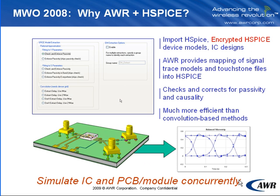AWR's signal integrity solution has HSPICE built right into it — not as an afterthought, but combined right into the environment. All the great features AWR is known for, including usability and innovative SI applications such as ACE and Axiom, work directly with HSPICE. We can send information directly to HSPICE and enforce passivity and causality on any data being sent, enabling very efficient simulations whether for an IC, a PCB, a module, or a combination of all these things.